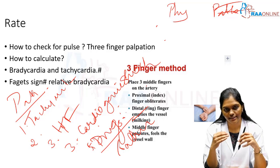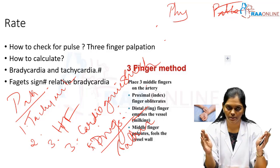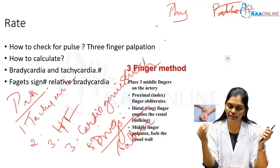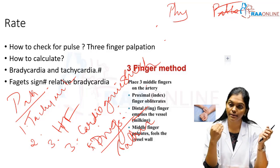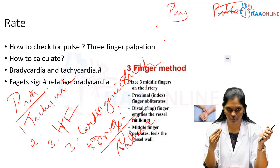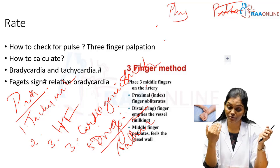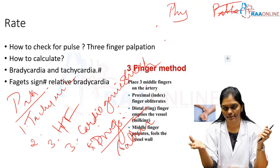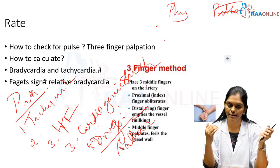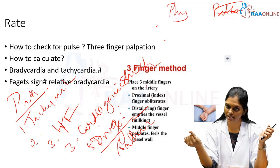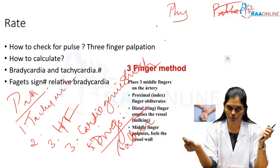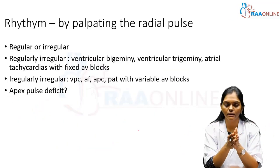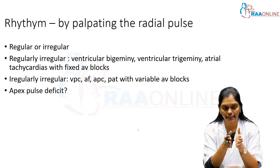There is a concept called the Faget sign. Normally, for every one degree Fahrenheit rise in temperature, the heart rate is supposed to increase by 10. If it does not increase, it is called relative bradycardia, which is the Faget sign. It is seen in some infections — most commonly enteric fever, dengue, brucellosis, and leptospirosis.